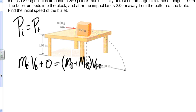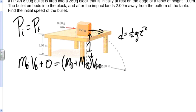We're asked to find the velocity of the bullet. We already know the mass of the bullet and the mass of the block, so we need to find the velocity of the bullet-block system after the collision. We're given that the block falls a distance of one meter and travels horizontally, so we can use projectile motion: d equals one-half g t squared, to solve for the time it takes to fall to the ground. We need this time to find the velocity of the bullet-block system.